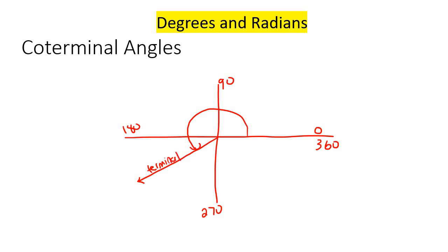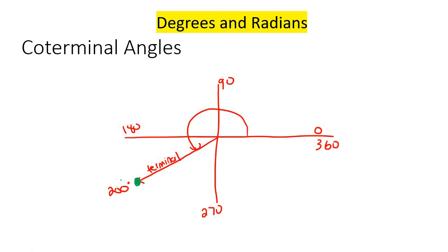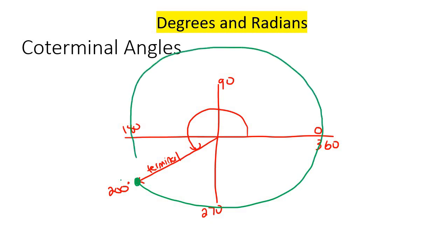Now let's say this angle is 200 degrees, right? Because if that's 180, then 200 makes sense. What would happen if I took this point over here and just said plus 360 — where would I end up? Well, if you plus 360, it would go all the way around and end up at exactly the same place. The angle would then be 560 degrees because you've added 360, but you would still have the exact same terminal side.